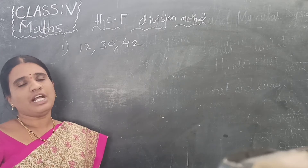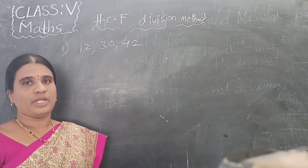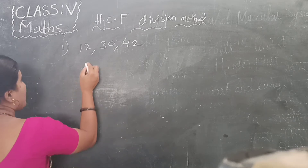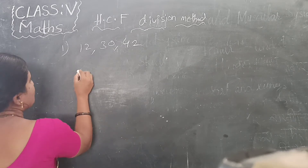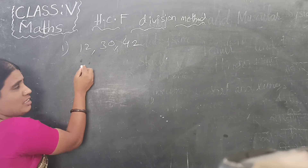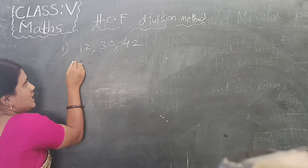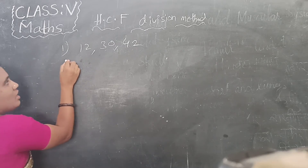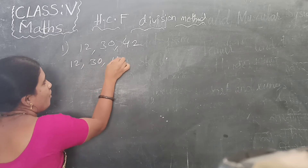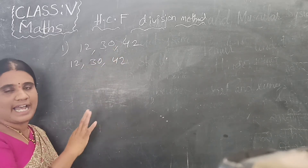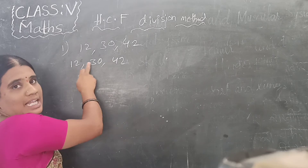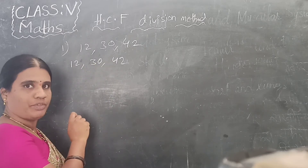By the division method, how do we do the HCF? First, these numbers you have to write in ascending order. The ascending order is 12, 30, 40. The question is already in ascending order. So: 12, 30, 40.